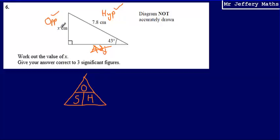I'm looking to find the opposite. I like to shade in the one I'm trying to find, which leaves me with the two I'm going to use. To work this out, I'm going to do sine of the angle, which is 43, so sine 43 multiplied by the hypotenuse, which is 7.8.